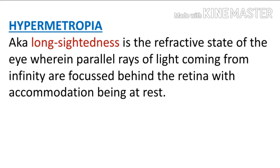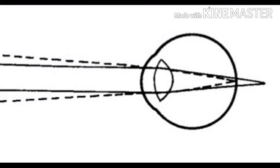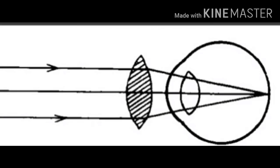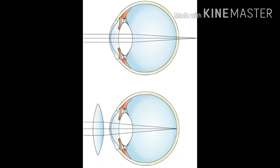Next is hypermetropia, also known as long-sightedness — the refractive state of the eye wherein parallel rays of light coming from infinity are focused behind the retina with accommodation being at rest. In hypermetropia, light rays focus behind the retina, causing a blurred image. For a clear image, rays must focus on the retina, shown by the dotted line in the diagram, but in hypermetropia they focus further back. Correction is with a convex lens, which converges the rays so they properly focus on the retina and produce a clear image.